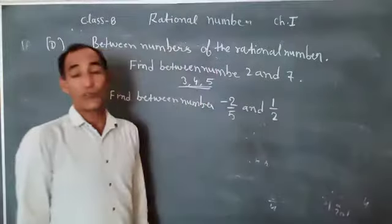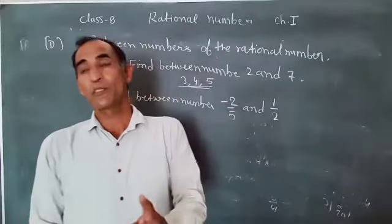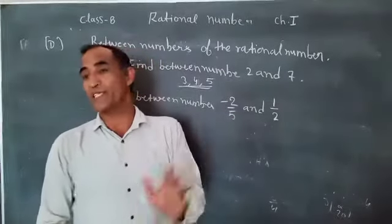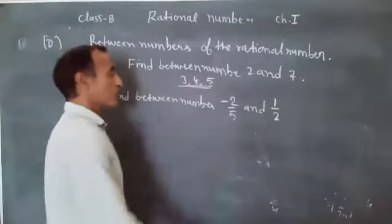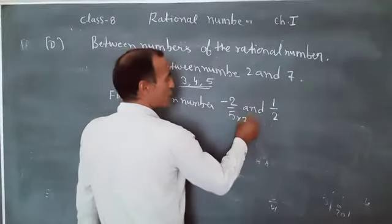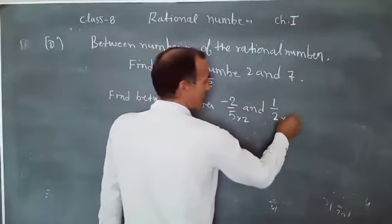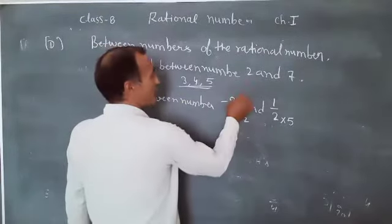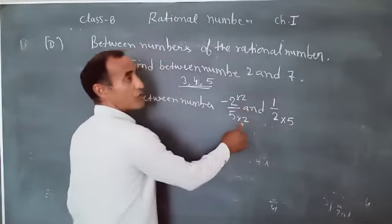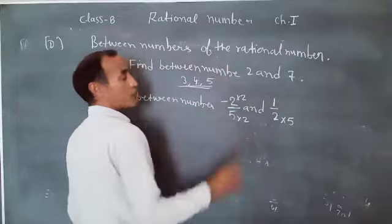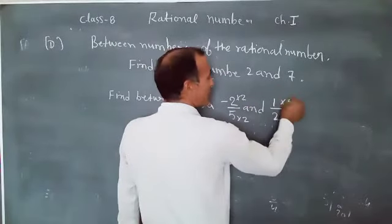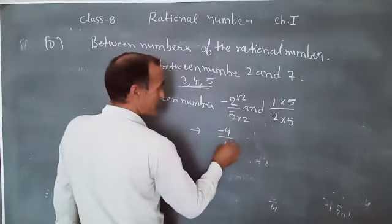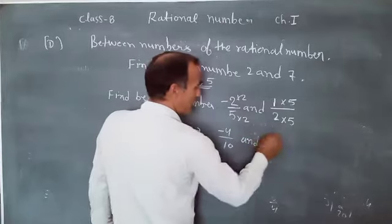One example is minus 2 upon 5 and 1 by 2. So at first, we convert the denominator of the same digit. So we find the LCM 5 and 2. LCM of 5 and 2 is 10. So we multiply by 5 into 5 and 2 into 5. So denominator we multiply by 2. So we multiply by numerator similar digit. Here into 2, numerator into 2. Here into 5, numerator into 5. So it is convert minus 4 upon 10 and 5 upon 10.